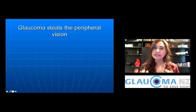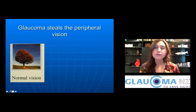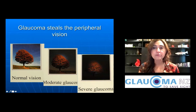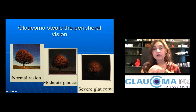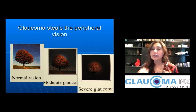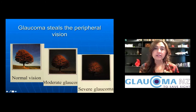Glaucoma is known as the silent thief of sight because it first steals your peripheral vision, making it difficult to notice. With normal vision you see a full image, but as glaucoma develops, the periphery becomes impacted, along with some contrast loss, until with severe glaucoma you only see the central part of your vision. Glaucoma is a very slow, insidious, silent process — there are no symptoms, so visual field deterioration can progress without the patient being aware.